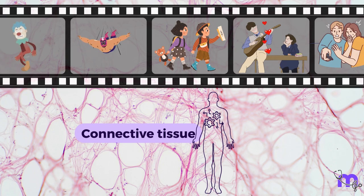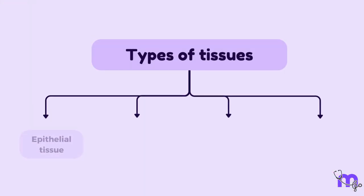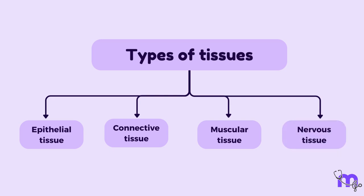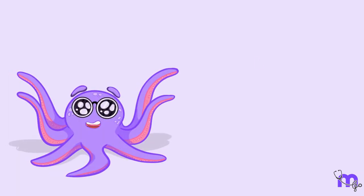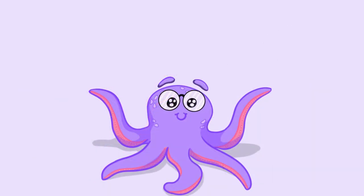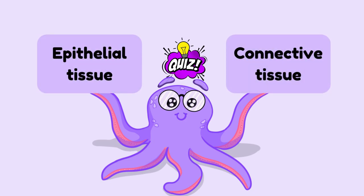In humans and other animals, there are four main tissues in the body: epithelial tissue, connective tissue, muscle tissue, and nervous tissue. In this session, we will discuss the components that are common to all types of connective tissue and then classify them. But first, let's attempt a quiz to learn more about the differences between epithelial tissue and connective tissue.